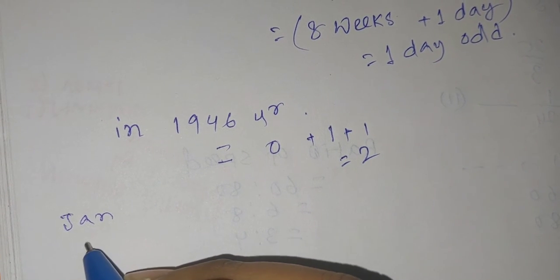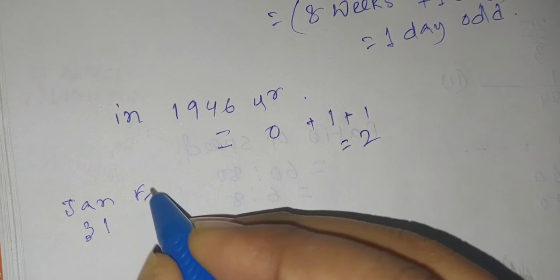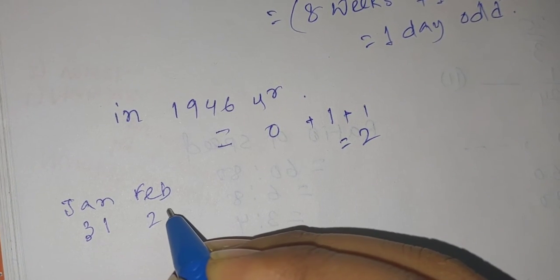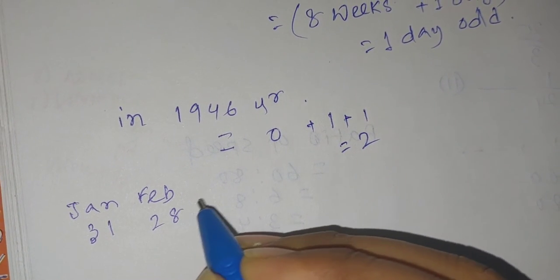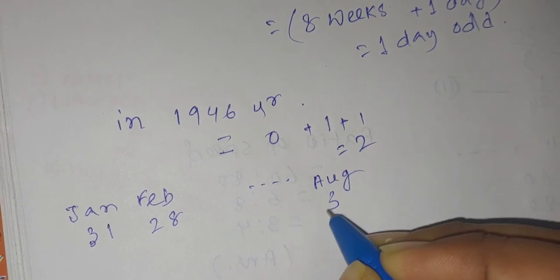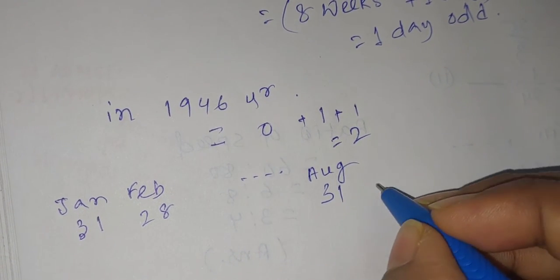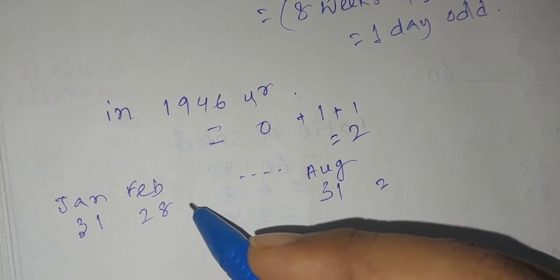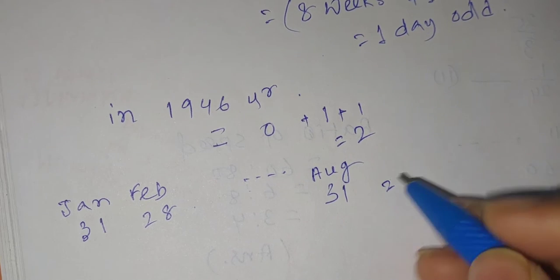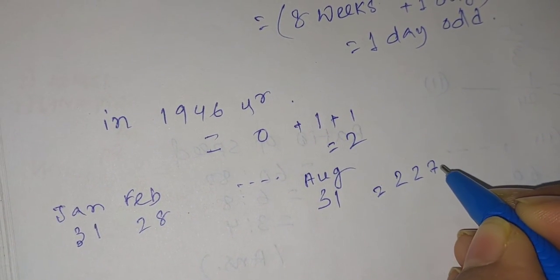Now if I try to find out for January, how many days are there? 31, February 28, till August 31, correct? So how many days are there? 31, 28, 31, 30, 31. In this way, till August it's 227.